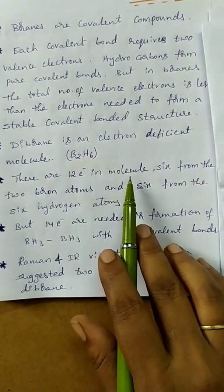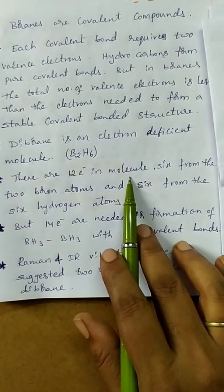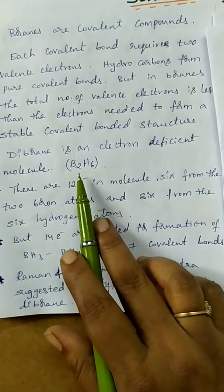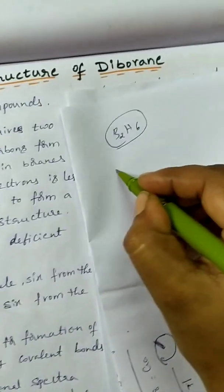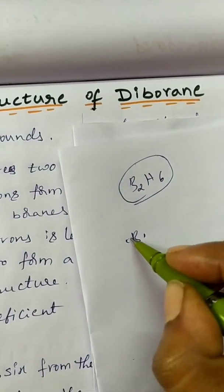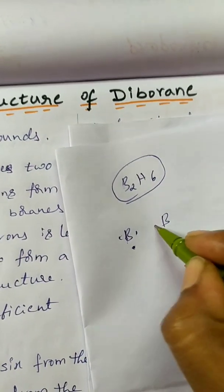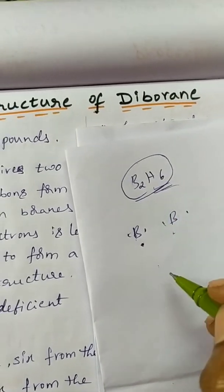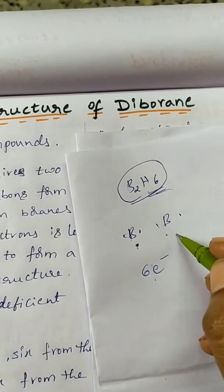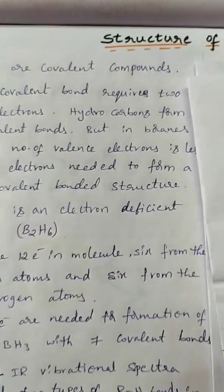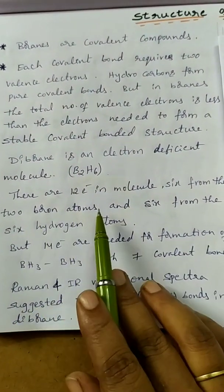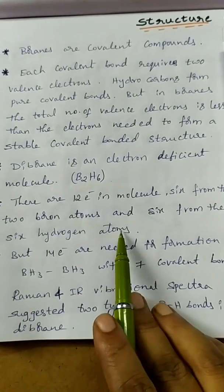The formula is B2H6 and there are 12 electrons in the molecule. We get 6 electrons from the 2 boron atoms — each boron contributes 3 electrons. There are 6 hydrogens, so that gives 6 more electrons. Totally: 6 electrons plus 3 electrons plus 3 electrons equals 12 electrons in the molecule.